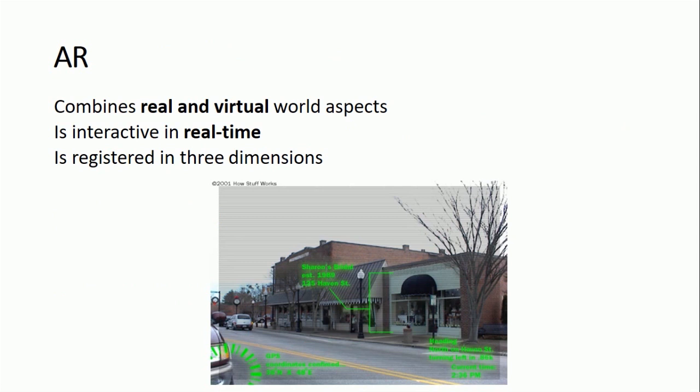Augmented reality combines real and virtual world aspects and interacts in real time. For example, looking at a background real image using an AR device, you can see the GPS location, current time, address, and details of a nearby shop. This is augmented reality using a device.